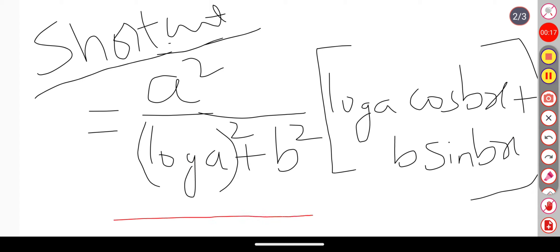a to the x by log a whole square plus b square into log a cos bx plus b sin bx. Using this shortcut, we can solve this problem.